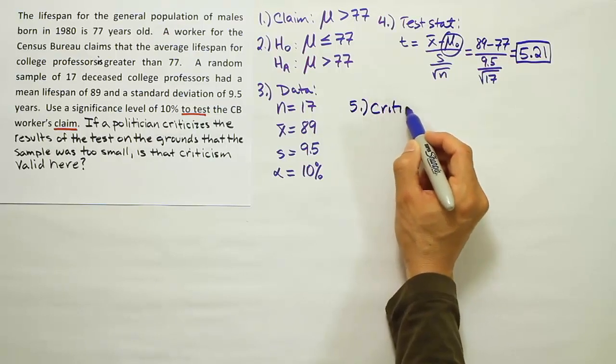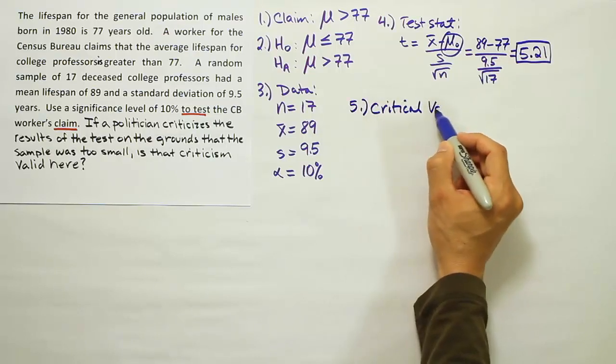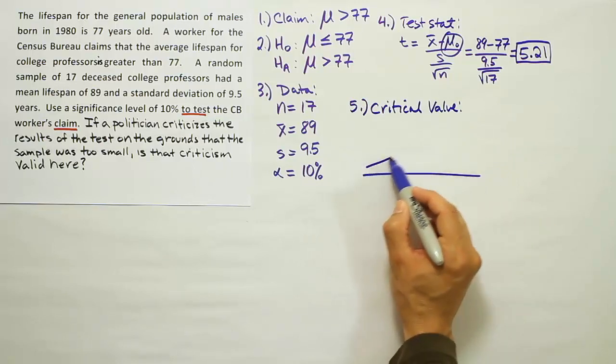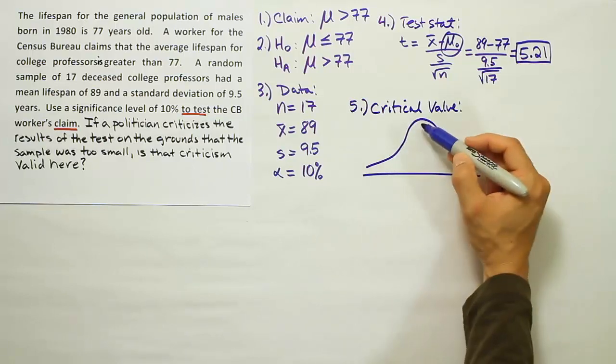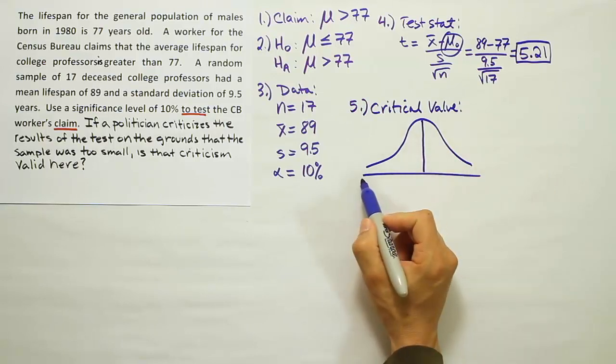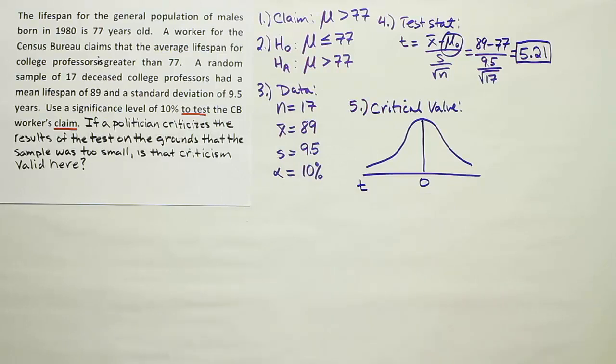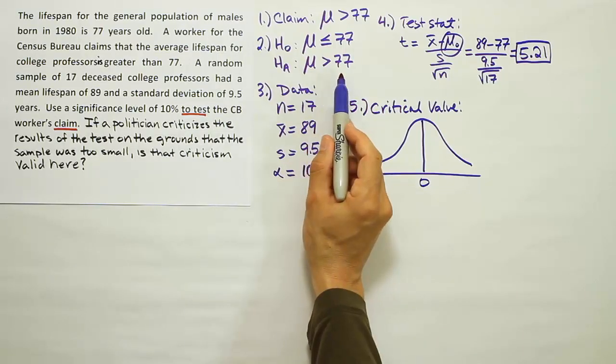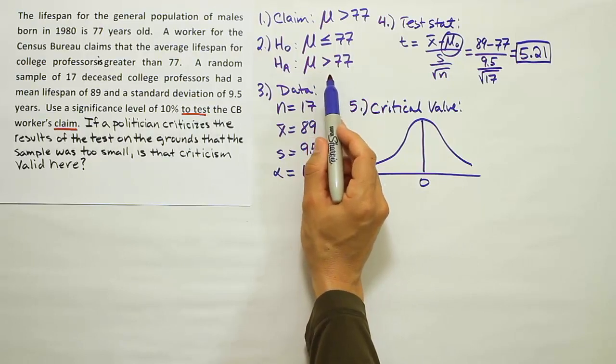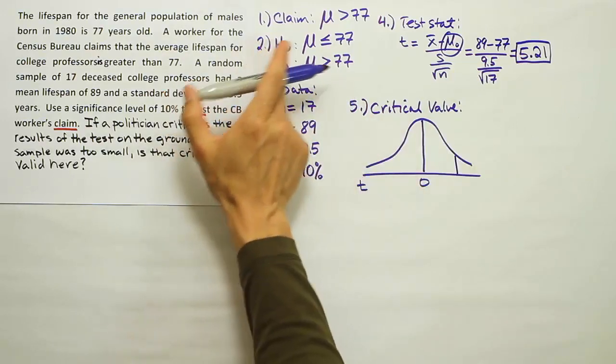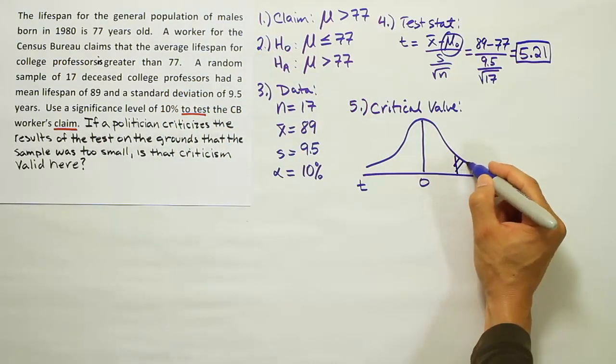When we do our critical value, we want to draw a bell curve. Label the number line at the bottom T, since this is a small sample t-test. We're going to look at HA and determine whether it's a right-tailed test, left-tailed test, or two-tailed test. Because that greater-than symbol is a right-tailed test, or that's like an arrow pointing to the right, it indicates a right-tailed test.